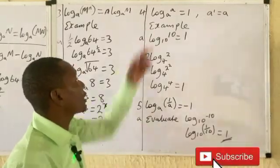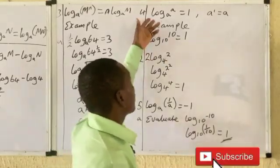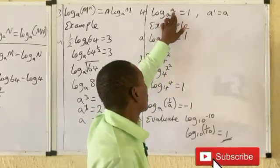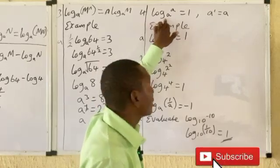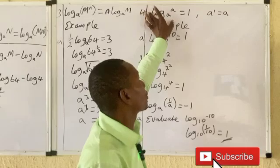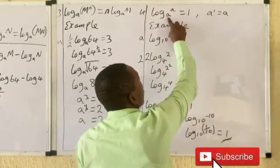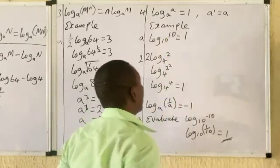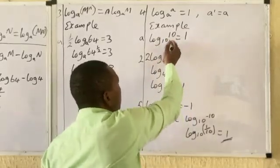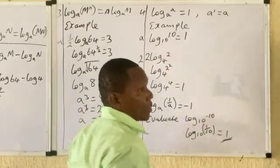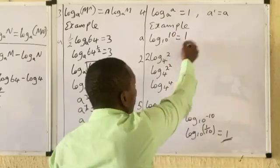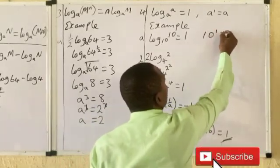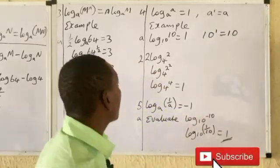The fourth law: log base a of a equals 1. Any log where the argument and base are the same gives an answer of 1. In index form: a raised to power 1 equals a, which is always true. For example, log base 10 of 10 equals 1. If asked to write in index form: 10 raised to power 1 equals 10.